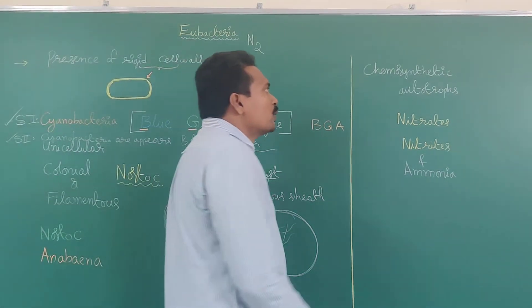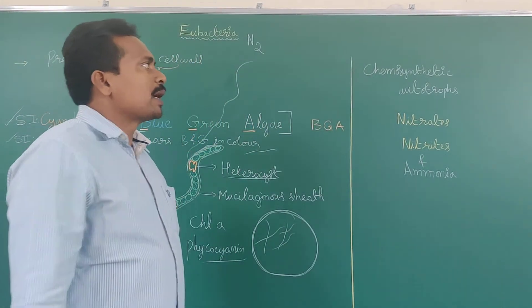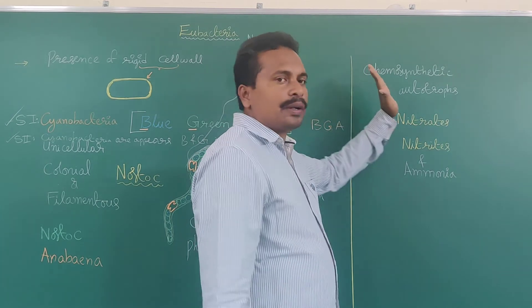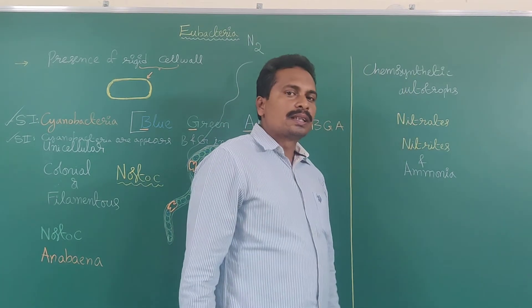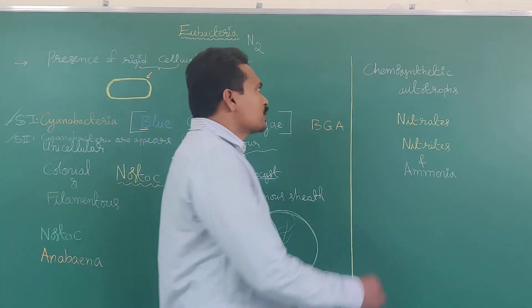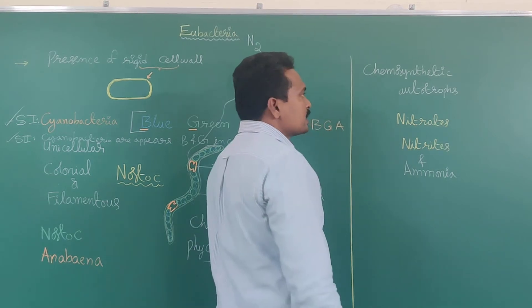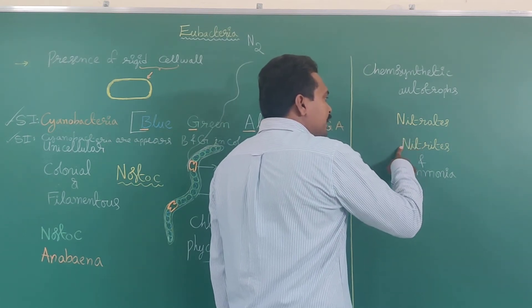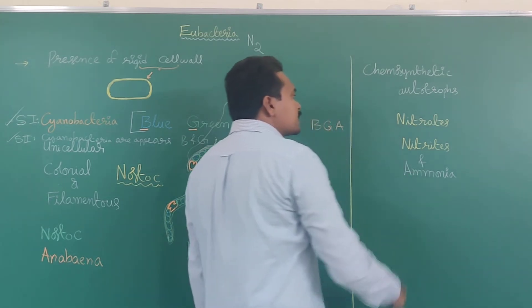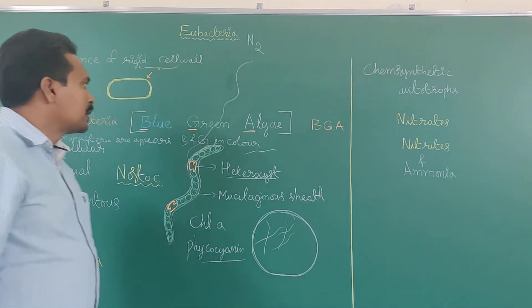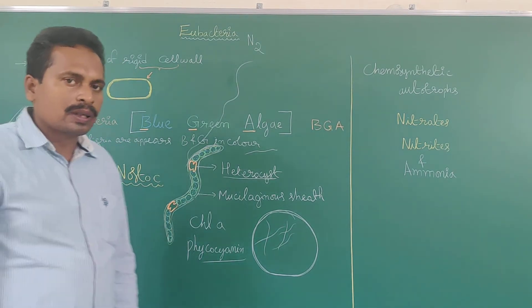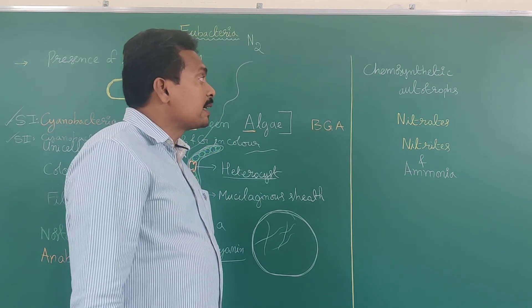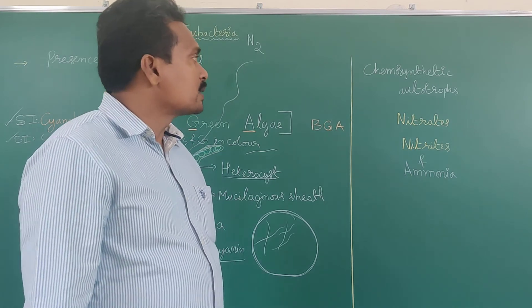Next we have to know about the mode of nutrition in cyanobacteria. Cyanobacteria are chemosynthetic autotrophs. They oxidize inorganic substances to get energy — substances like nitrates, nitrites, and ammonium — to obtain energy. Chemosynthetic autotrophs means they get energy from oxidation of inorganic substances.